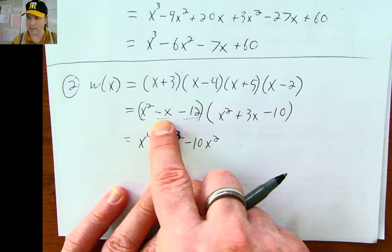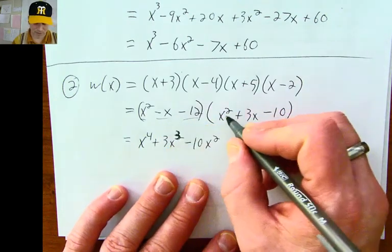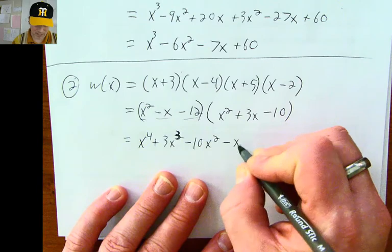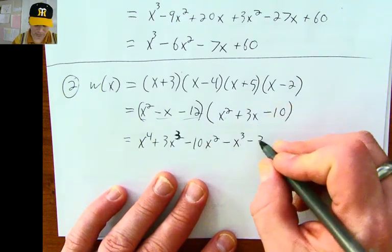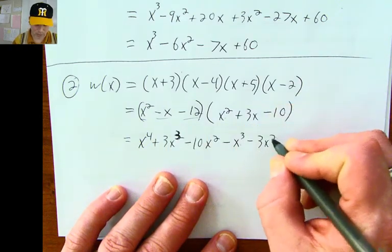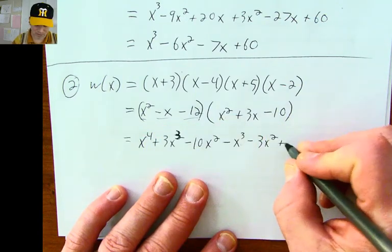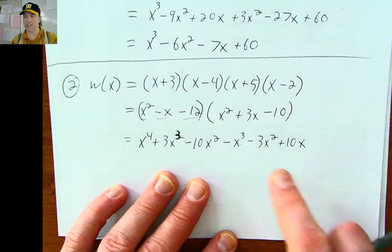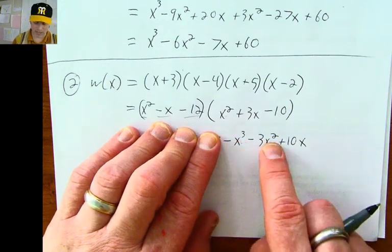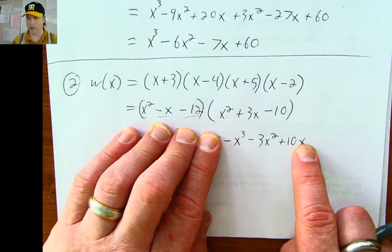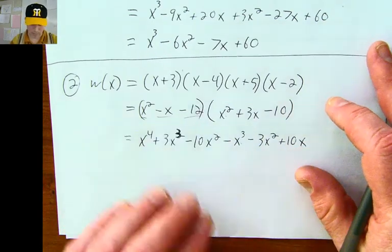Next, I'm going to distribute the negative x into the set of parentheses. Negative x times x squared is negative x cubed, negative x times positive 3x is negative 3x squared, and negative x times negative 10 is positive 10x. The exponents go x cubed, x squared, x to the 1 — which clues me in that I probably did it right.